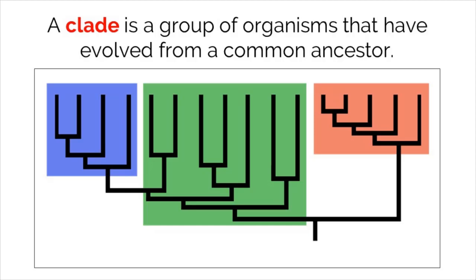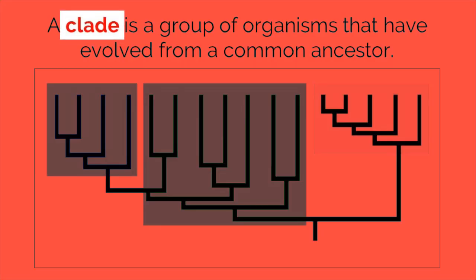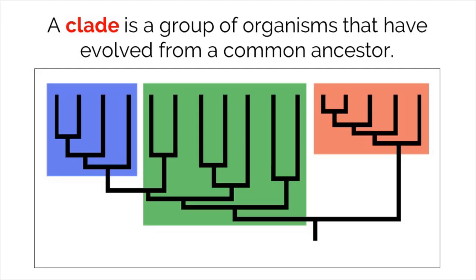Topic 5.4 in IB biology focuses on cladistics, which is a method of classifying used to depict evolutionary relationships and common ancestry between organisms. The base unit used to identify relationships in cladistics is a clade. A clade depicts a group of organisms that have evolved from a common ancestor.